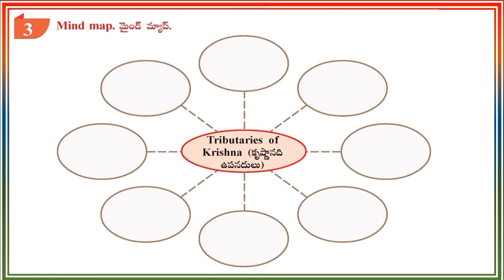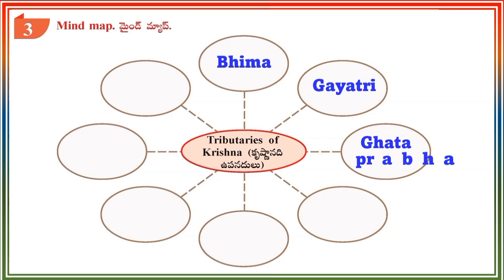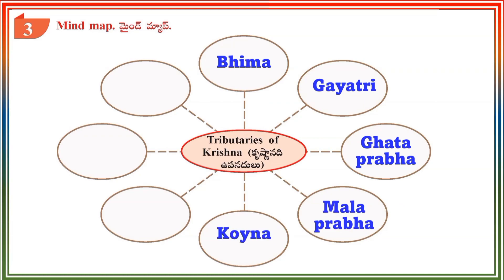Section 3 — Mind Map: Tributaries of River Krishna include Bheema, Ghataprabha, Malaprabha, Koina, Muneru, Meera and Veemana.